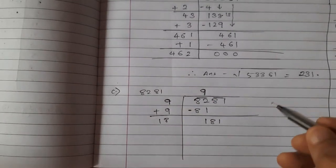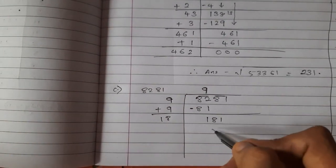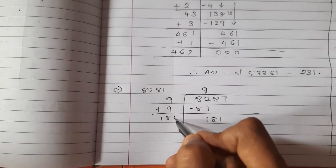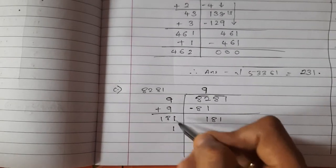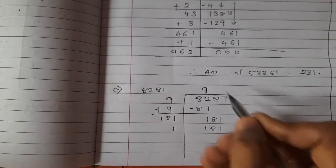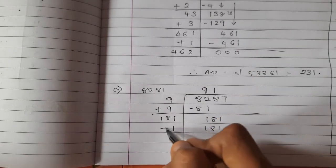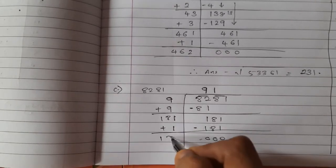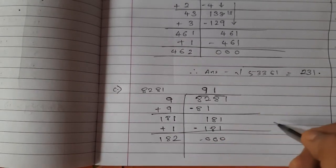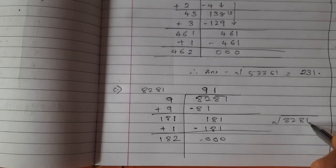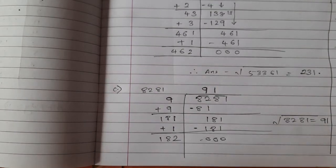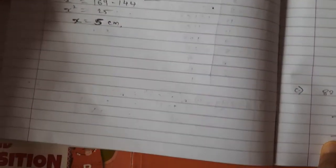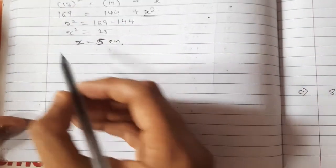Bring down 81. Now you need 181. Take 1 here — multiply 181 × 1 = 181. Write 1 in the quotient and add 1 to the divisor. Subtract: 181 − 181 = 0. So the square root of 8281 is 91. Very simple!